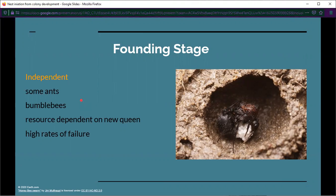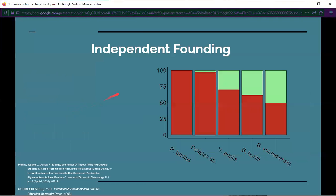There's very high rates of failure and it is very resource dependent on the new queen. The new queen is responsible for laying eggs, for foraging, and for protection. In fully grown colonies, the queens have workers to forage for them and protect their young. But if a queen is founding their colony independently, it's all up to them.